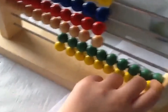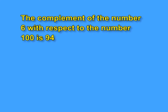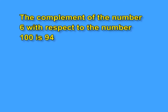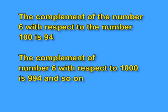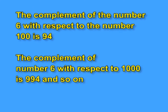The complement of a number is the remaining value with respect to a given number. For example, the complement of 6 with respect to 10 is 4. The complement of 6 with respect to 100 is 94, and with respect to 1000 is 994, and so on.